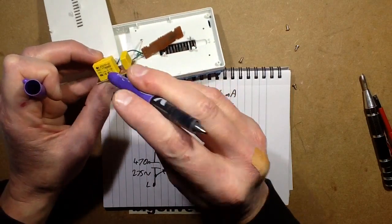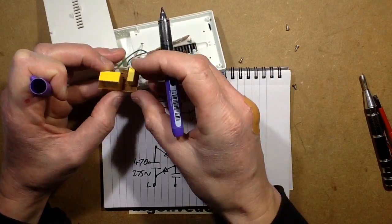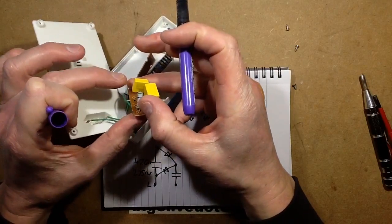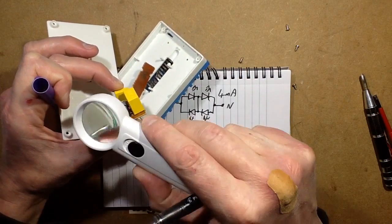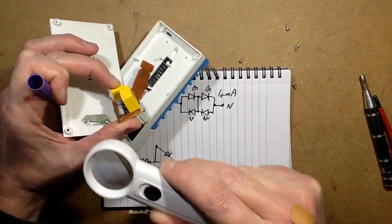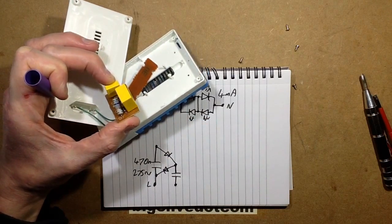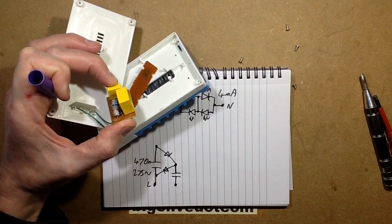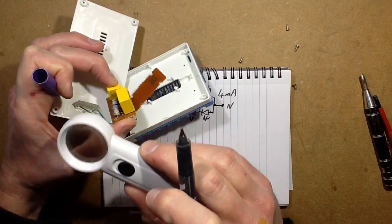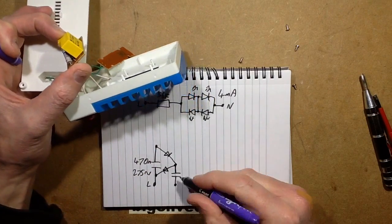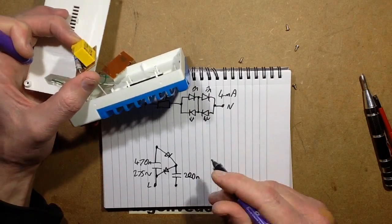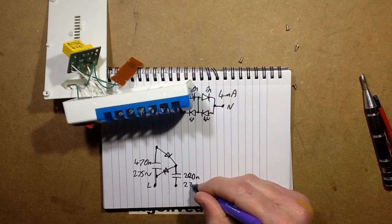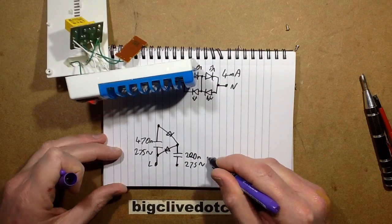Generally speaking these capacitors are rated for about 600 volts or so. The smaller one is rated... that's quite small text on that one. 220 nano and it's also an X2. So these are both suppression capacitors. That's quite good. So that's 220 nano and that again is 275 volt AC because it is X2.